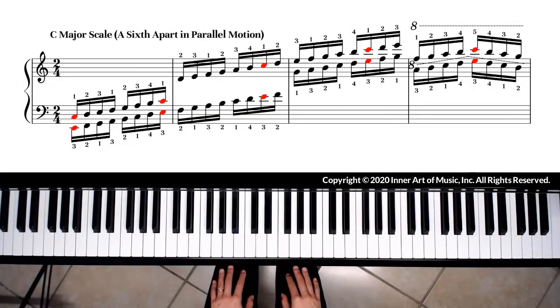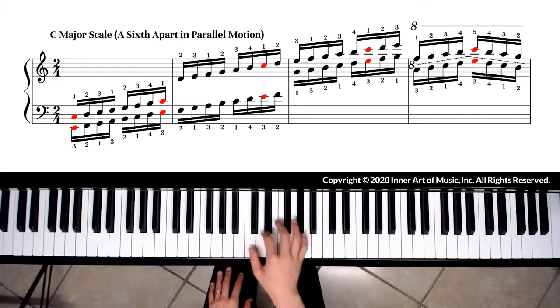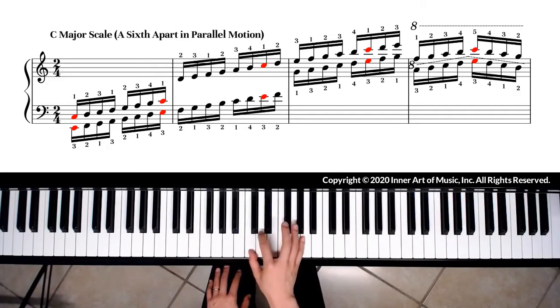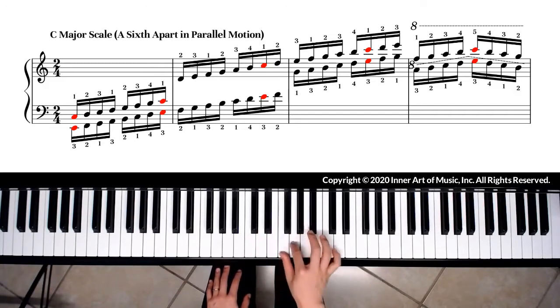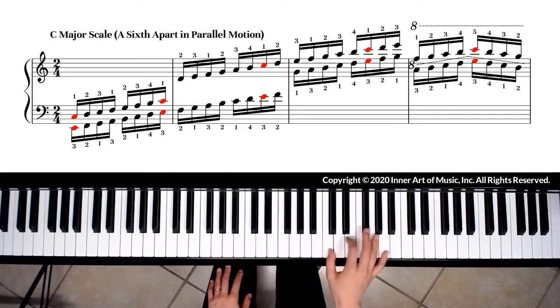The fingering for a sixth apart scale will also follow the octave apart scale fingerings. The right hand starts on C with fingering 1, 2, 3, 1, 2, 3, 4, 1. We arrive on C with thumb.